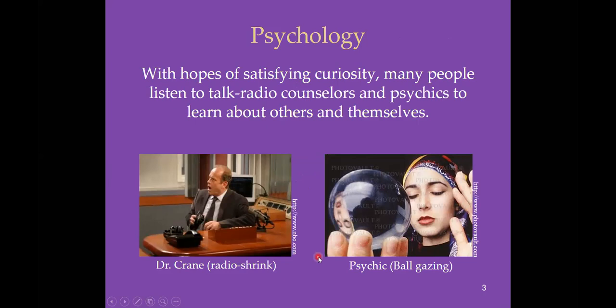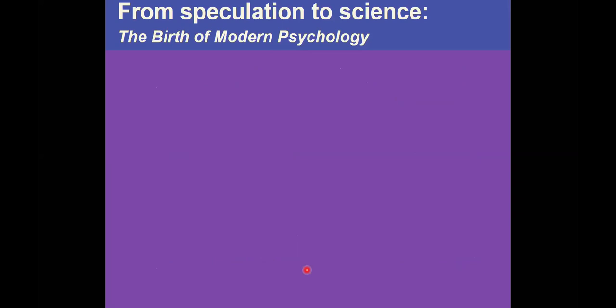Some people go to radio talk show counselors or maybe a psychic to try to learn about themselves or others. But the information from these sources can be questionable or simply inaccurate. So how do we find a way to address these questions in a way that's less likely to produce error and inaccuracies? We're going to study how we moved from simply speculating about behavior and mental processes to the actual psychological science we have today.